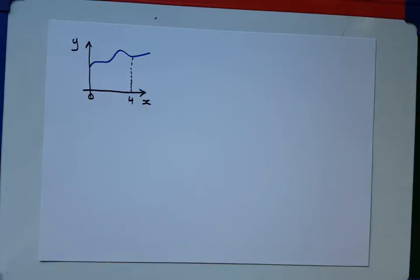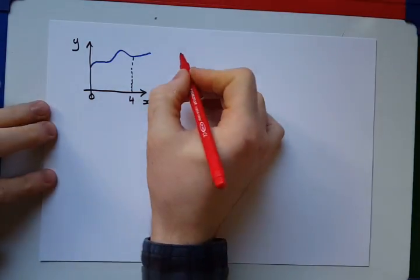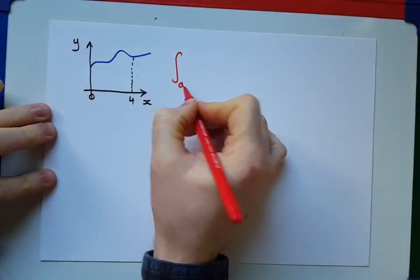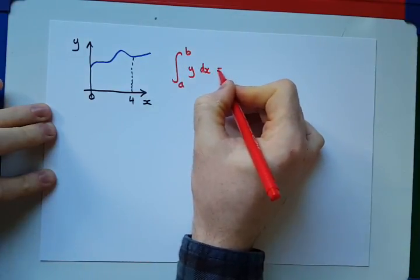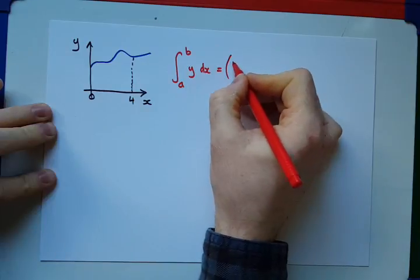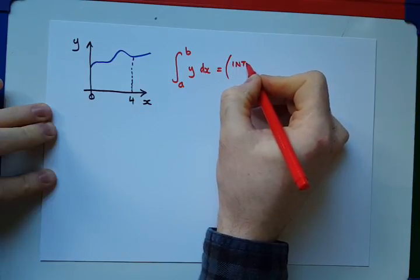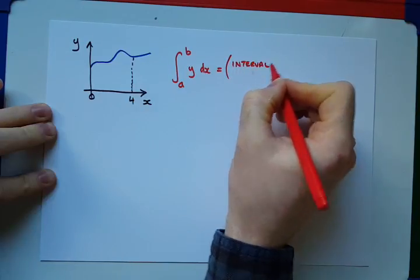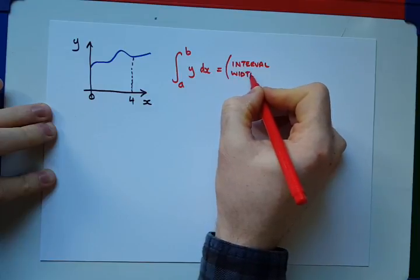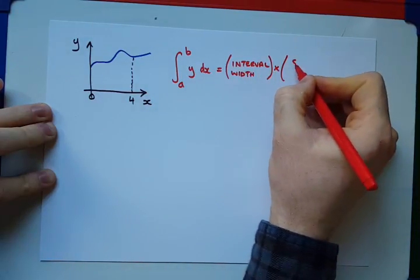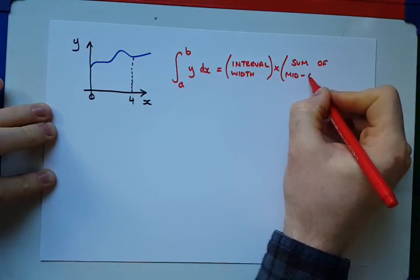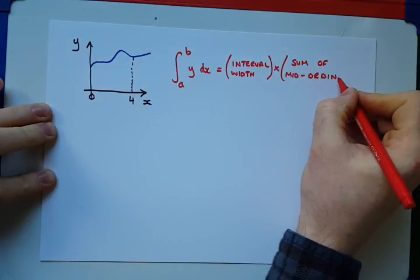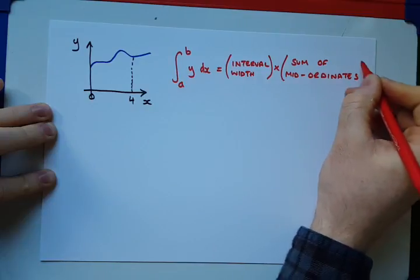So, the mid-ordinate rule states that an integral between two limits of y with respect to x is equal to an interval width multiplied by the sum of mid-ordinates. So, this is the rule that we're going to follow.